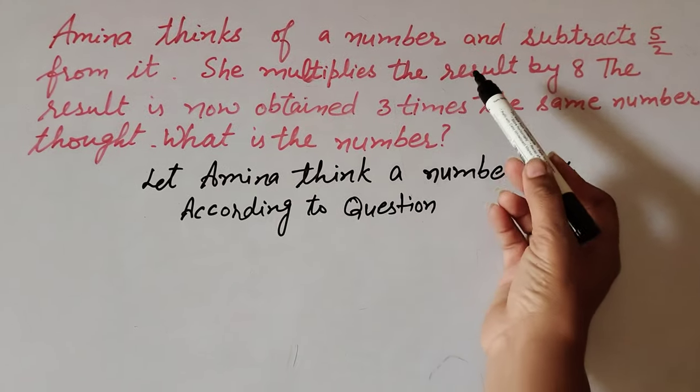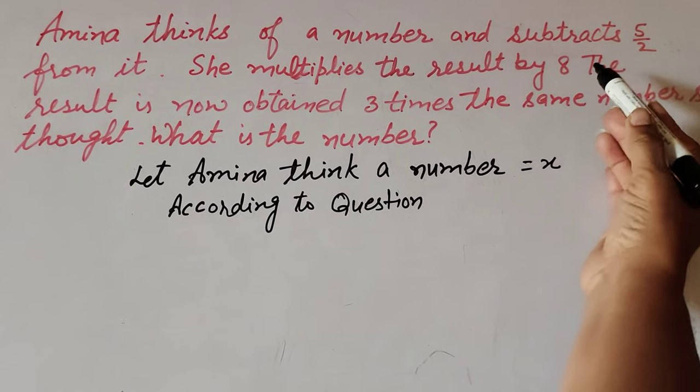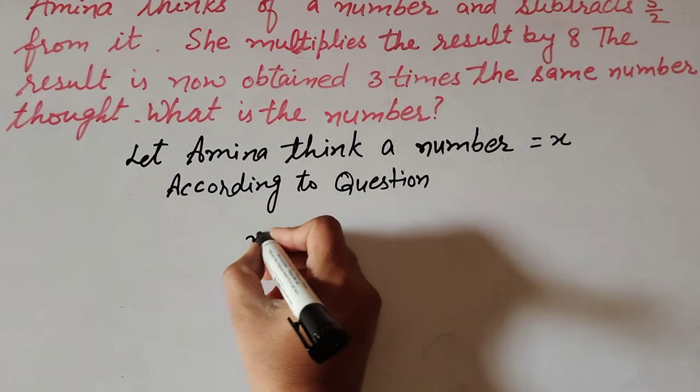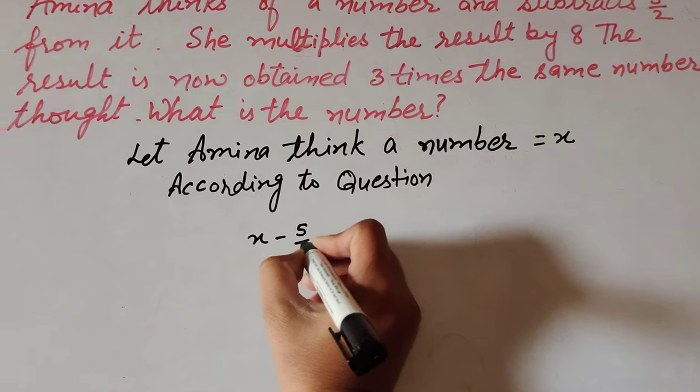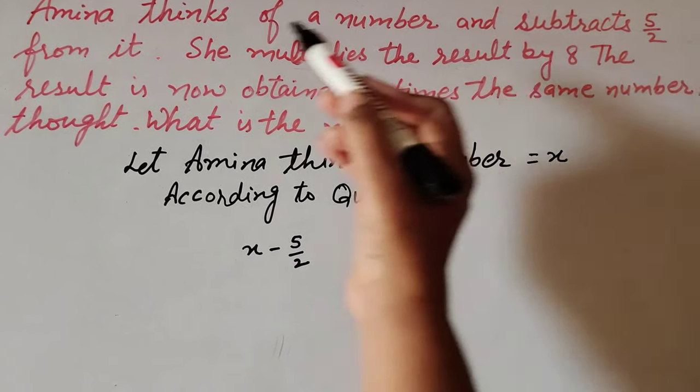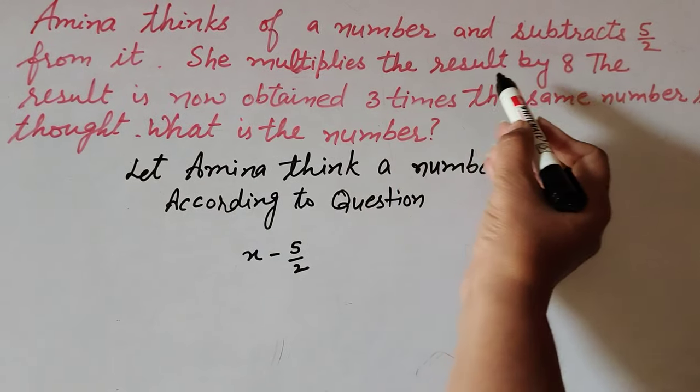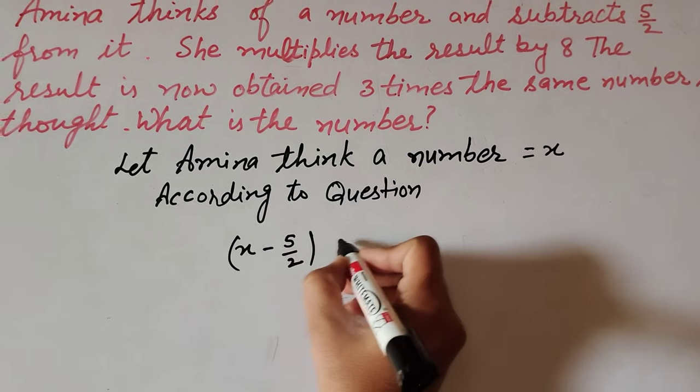Amina thinks the number x. Subtract 5/2 from the number: she subtracts 5/2, so x - 5/2. And she multiplies the result by 8, so (x - 5/2) × 8.